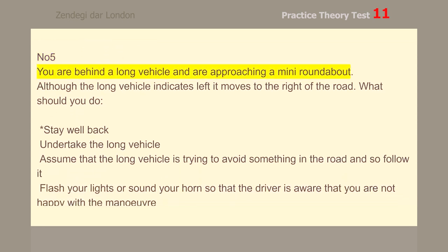Number 5. You are behind a long vehicle and are approaching a mini roundabout. Although the long vehicle indicates left, it moves to the right of the road.